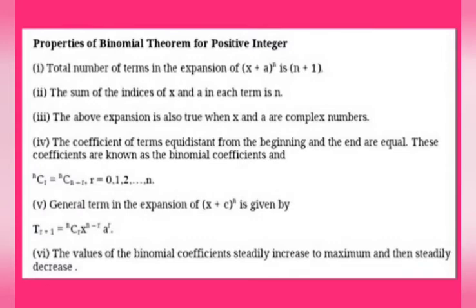Property number 2 of the binomial theorem: the sum of the indices of x and a in each term is n. If you look at the general term ncr into x power n minus r into a power r, the powers if you add, it is equal to n. Property number 3: when x and a are complex numbers, the expansion is also valid.